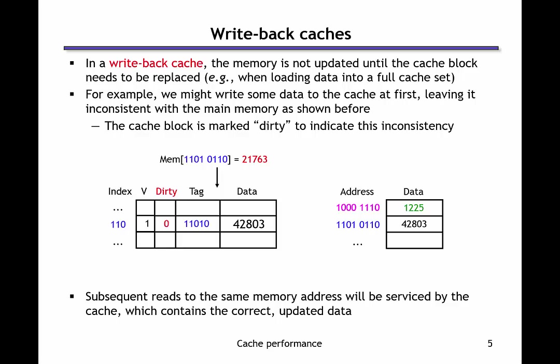The alternative strategy, used much more commonly, is a write-back cache. In a write-back cache, we add one extra piece of data to each cache block: a dirty bit. When we first load data from memory into the cache, we set this dirty bit to zero because the data in the cache is consistent with memory. When we write to a block stored in the cache, we update the value in the cache block and mark the data as dirty. That dirty bit indicates the data in the cache is now inconsistent with the data in memory — we've made a note to deal with this inconsistency later.